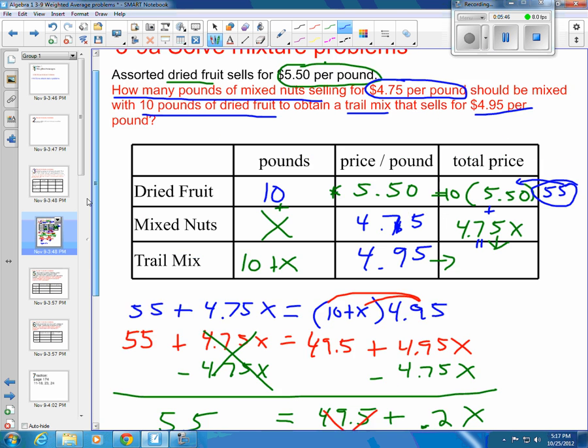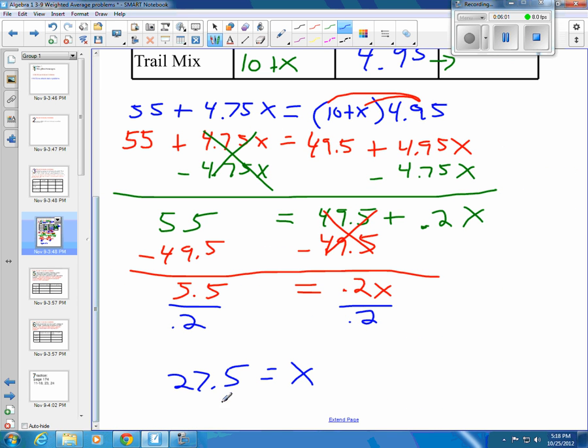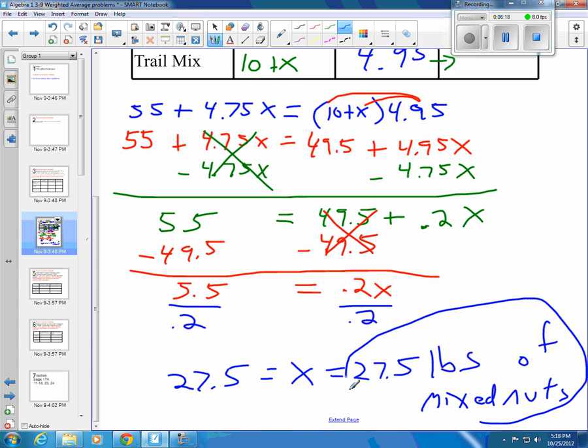Let's go back and reread our question. Our question was, how many pounds of mixed nuts should be mixed with the dried fruit? How many pounds of mixed nuts? Mixed nuts was X, and we're looking for how many pounds. X is in pounds, and that's our answer. Our answer would be 27.5 pounds of our mixed nuts. That answers our question being asked.